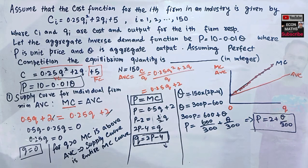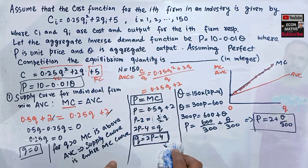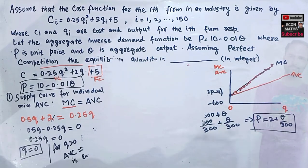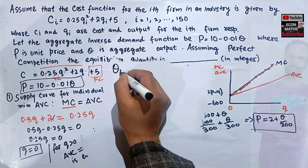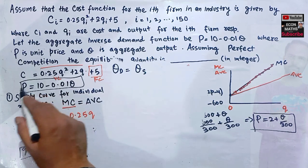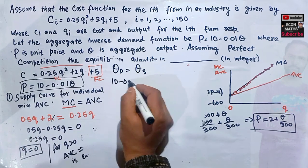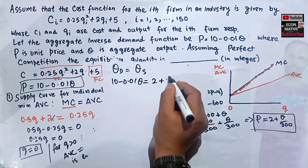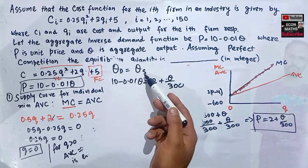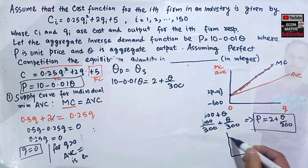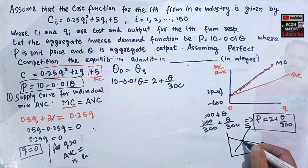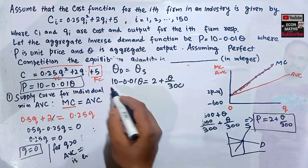Equilibrium occurs where quantity demanded equals quantity supplied: 10 − 0.01Q = 2 + Q/300. Here the left side is our demand curve and the right side is our market supply curve.